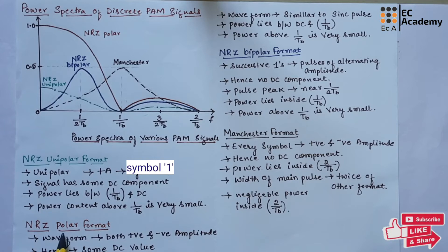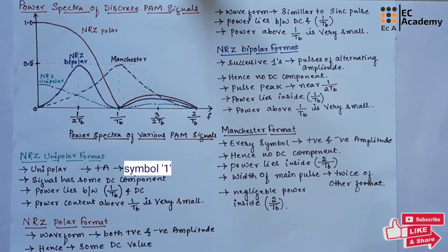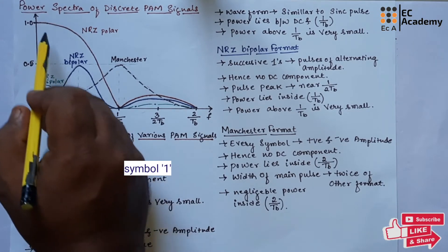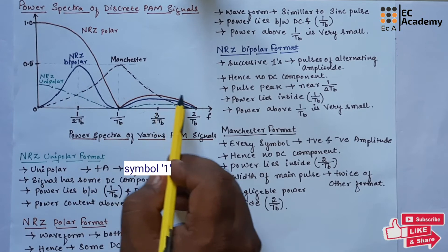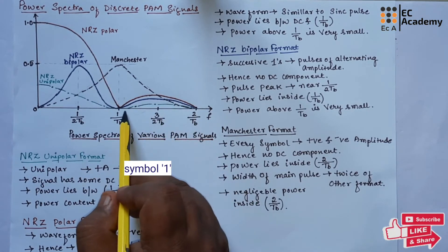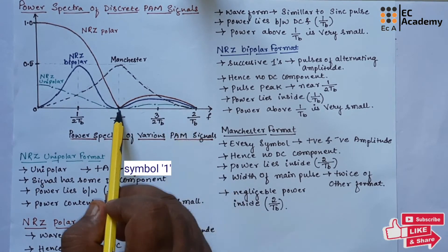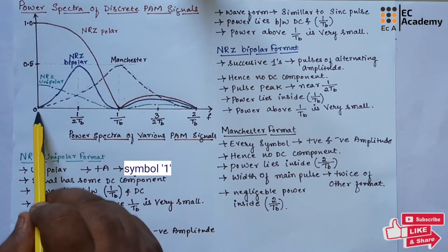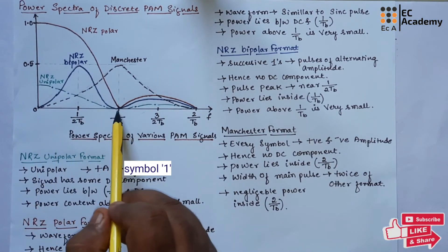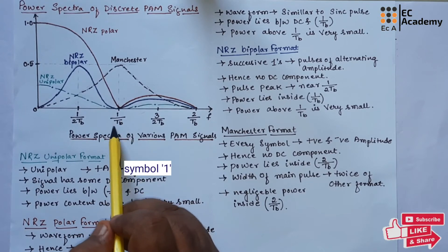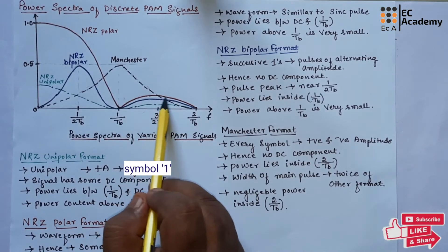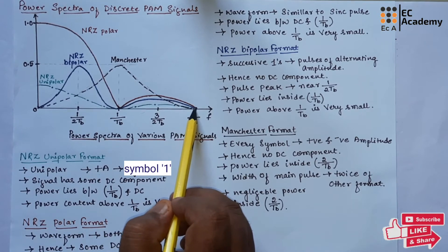Now let us understand NRZ polar format. In NRZ polar format, the waveform is represented with both positive and negative amplitude. Hence, we can say it is having some DC value. The waveform is represented in red color. If you observe this waveform, it is similar to a sinc pulse. For NRZ polar format, the power will lie between the DC value as well as the bit rate 1/TB. The power above the bit rate will be very small.